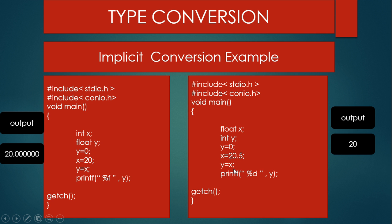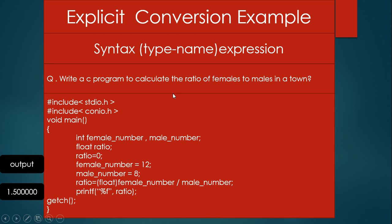Now I will demonstrate explicit conversion with an example. The syntax for explicit type conversion is: write the type name within brackets, then the expression. The example is: write a C program to calculate the ratio of females to males in a town. I declare two variables, female_number and male_number, and a ratio variable with data type float.